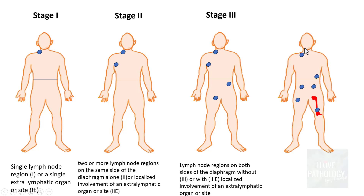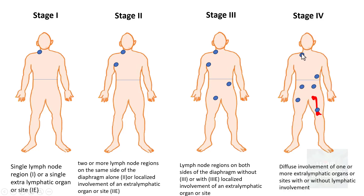Stage four is basically diffuse involvement — one or more extra-lymphatic organs or sites with or without lymphatic involvement. In this case you can see extensive lymph node involvement, abdominal organ involvement, and even the bone marrow. Stages three and four are considered disseminated diseases. This is the Ann Arbor Classification with stages one through four.